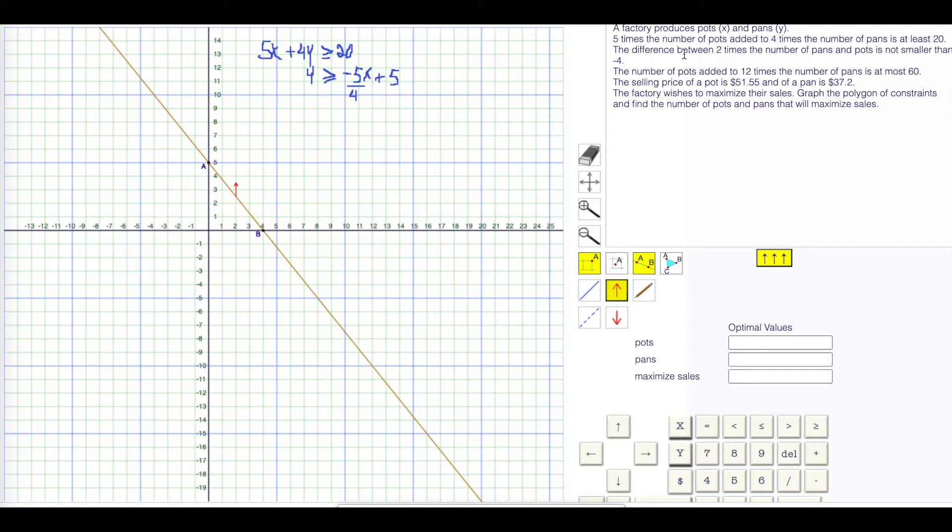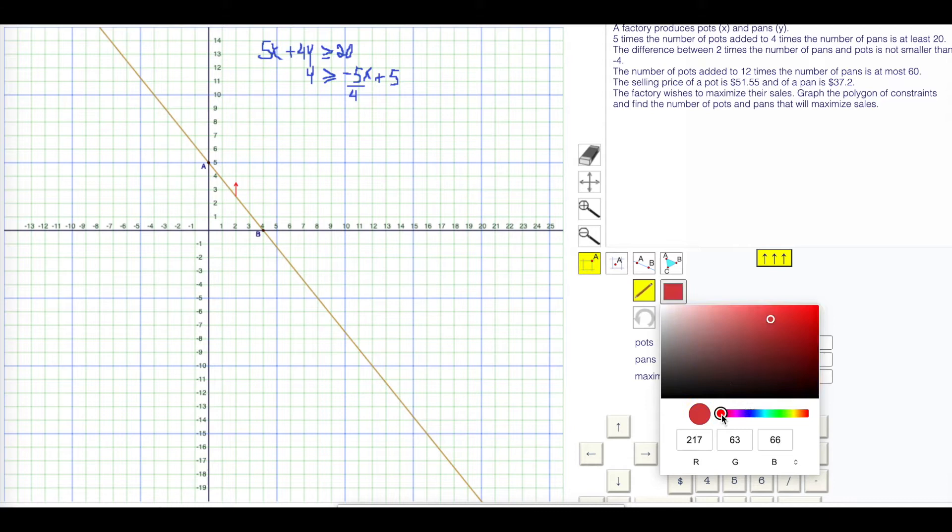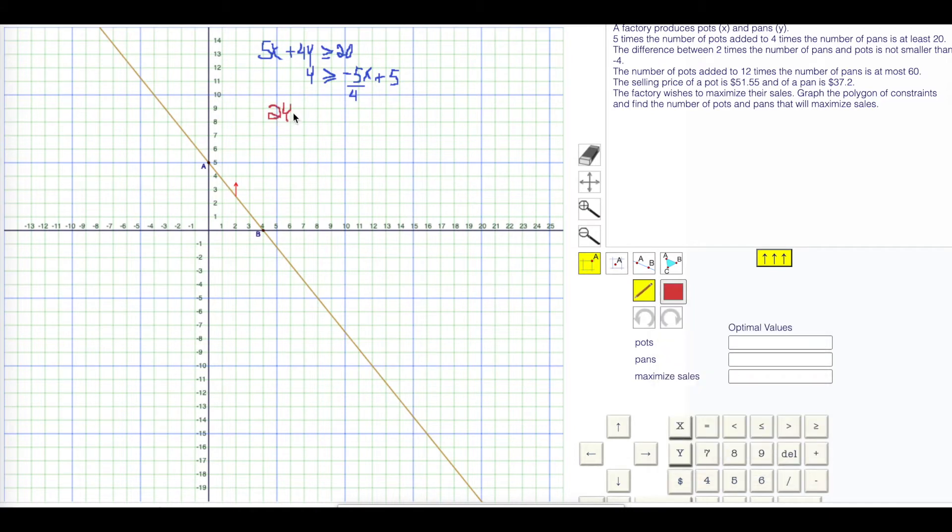Next one, the difference between two times the number of pans, that's 2y. I'm just going to go into a different color here, maybe red. 2y, take away, that's difference. Pots, that's just x, is not smaller than negative 4. That means greater than or equal to negative 4.